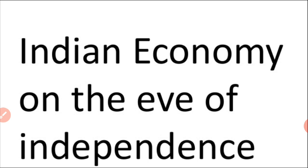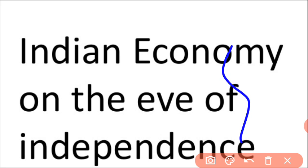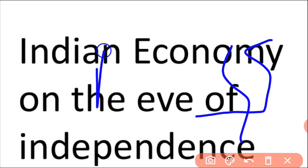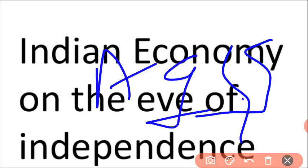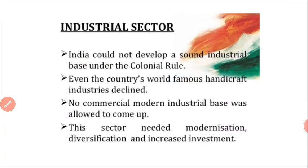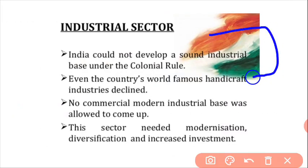We are going to study about the condition of the industrial sector at the time of independence. As we studied about the agriculture sector — that it was stagnant, too backward, with low productivity and the Zamindari system — similarly, let us see what was the condition of the industrial sector of India at the time of independence.